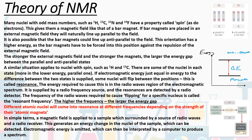The energy required to cause this is in the radio waves region of the electromagnetic spectrum. The frequency of the radio waves required to cause the flipping for a specific nucleus — to go from the parallel to the anti-parallel state — is called the resonant frequency. The higher the frequency, the larger the energy gap. Remember the equation E equals h-nu: E is the energy, h is Planck's constant, and nu is the frequency. So the bigger the frequency, the larger that energy gap between the two states.